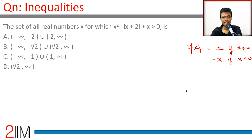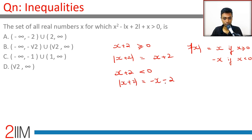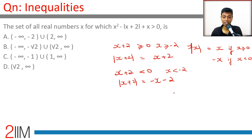Here we have modulus of x+2. So if x+2 is greater than or equal to 0, then modulus of x+2 is just x+2. If x+2 is less than 0, then modulus of x+2 is minus x minus 2. This means x greater than or equal to minus 2, or x less than minus 2. So we solve this as two separate quadratic equations.